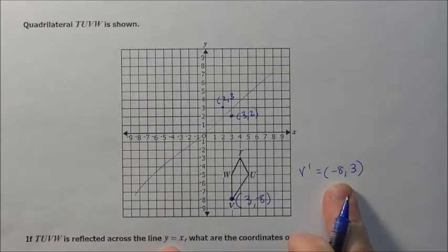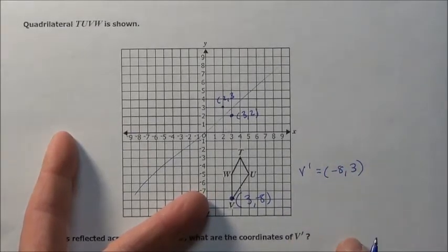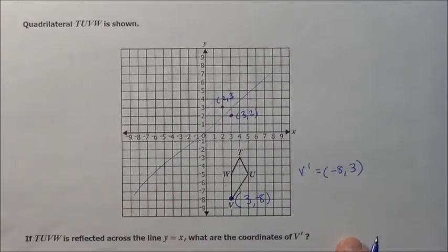If you do it across the line Y equals negative X, they flip and you've got to negate them, change their values. Negatives go to positives, positives go to negatives.